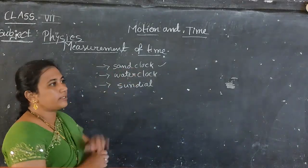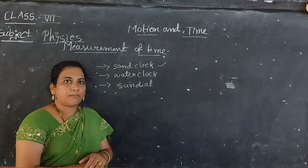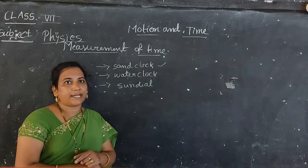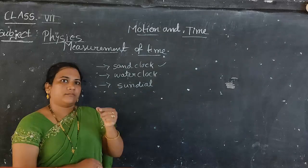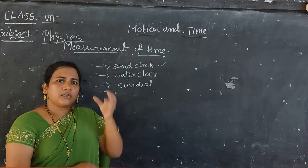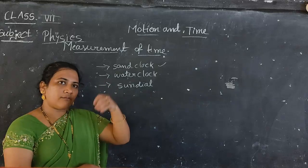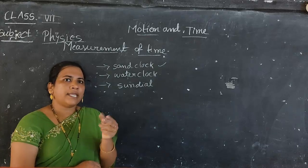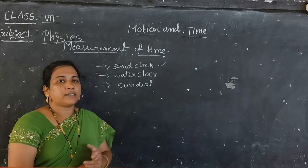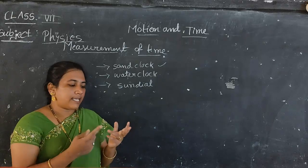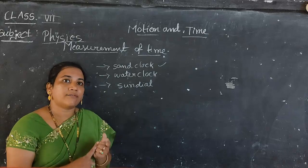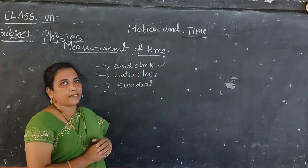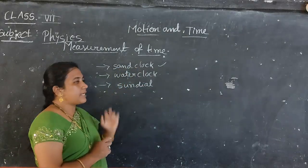For the sand clock, the measured time depends upon three factors: the size of the bulb, the size of the sand particles, and the size of the neck hole. If the hole is large, sand flows faster; if the hole is very small, it takes more time. So the time period measured by a sand clock depends on all three of these factors.